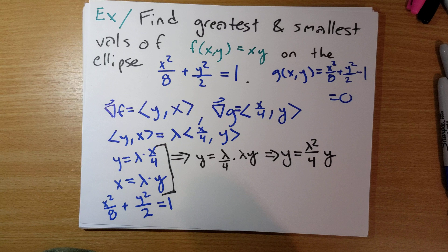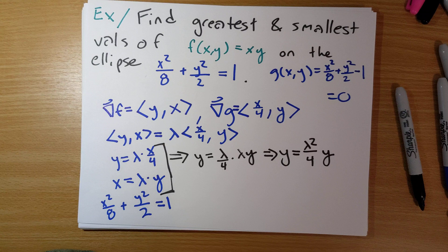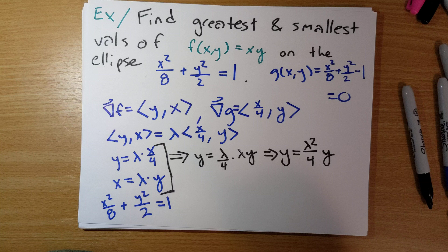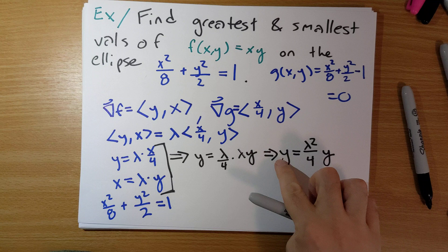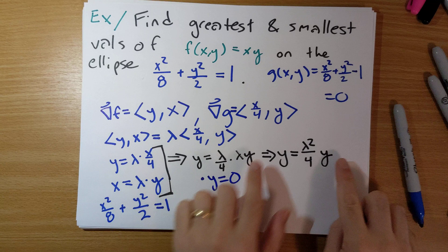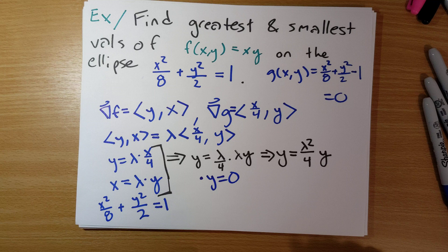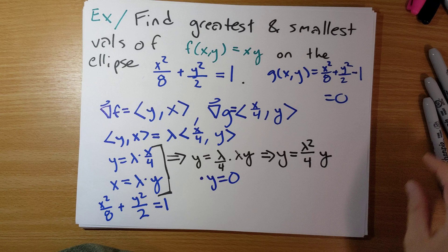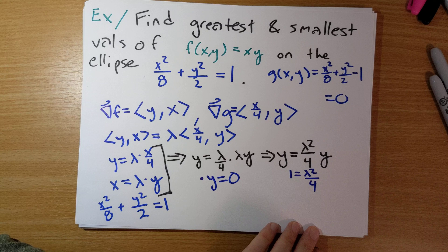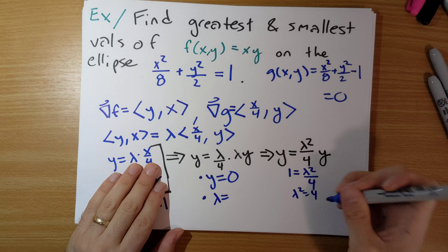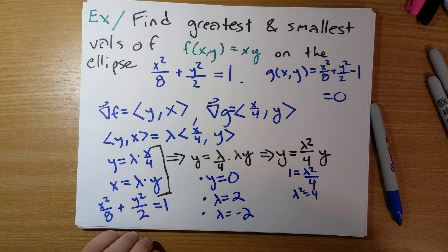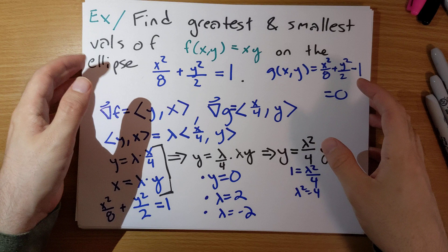There are a couple of cases here. Either y equals 0 — in which case both sides are 0, which is certainly true — or y is not 0, in which case we can cancel y from both sides to get 1 equals lambda squared over 4, so lambda squared equals 4, meaning lambda equals 2 or lambda equals negative 2.